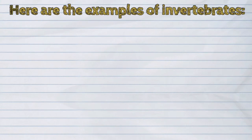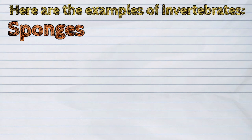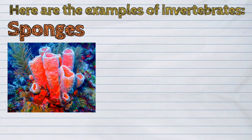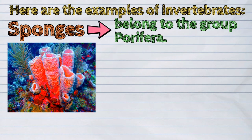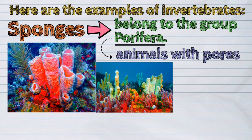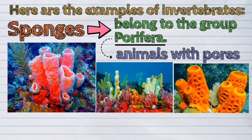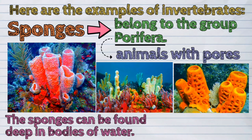Here are the examples of invertebrates. The first one are the sponges. Sponges belong to the group Porifera, or the animals with pores. The sponges can be found deep in bodies of water.